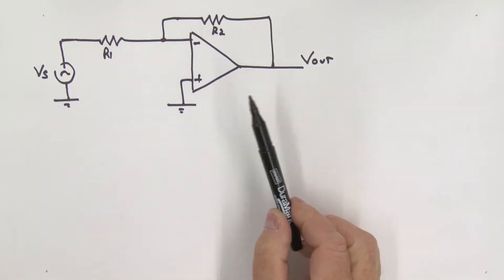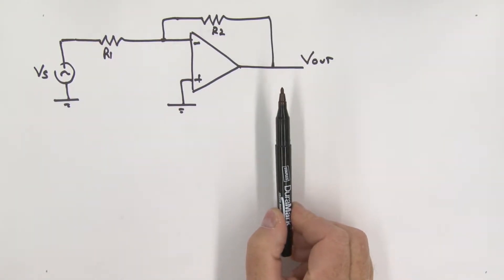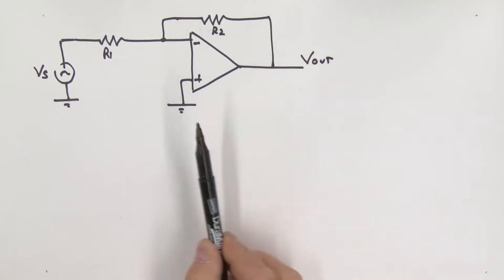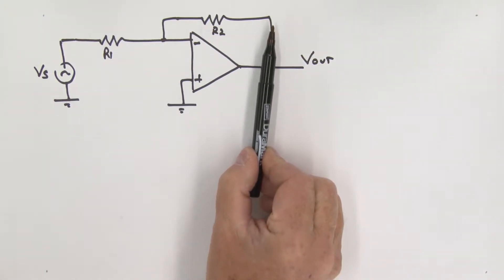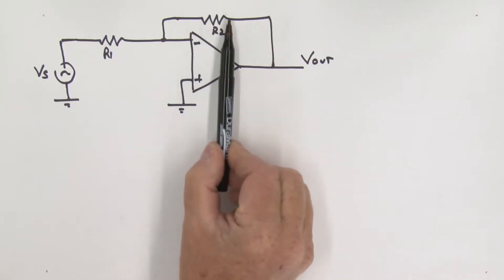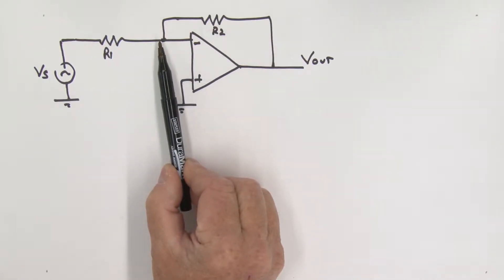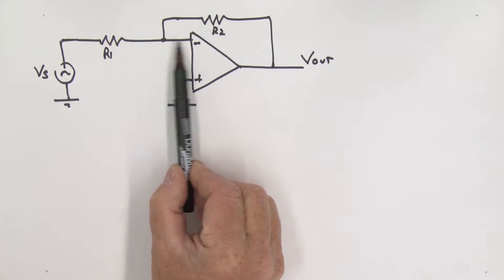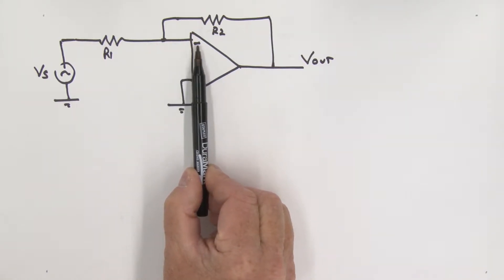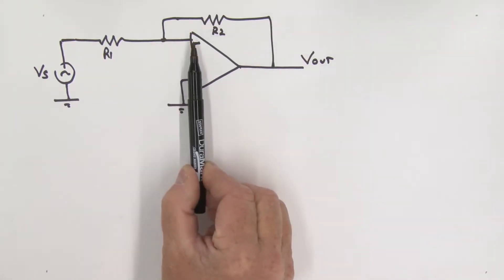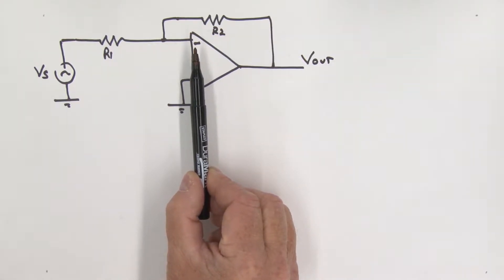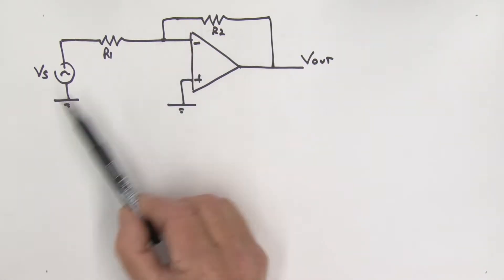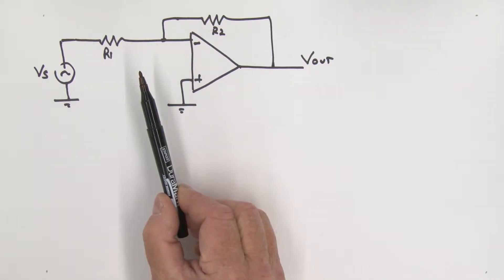What we're going to consider now are what we refer to as closed-loop circuits. We're actually going to take this output and connect it through this resistor back to the inverting input. This type of connection is referred to as a negative feedback connection. We're going to consider a bunch of negative feedback type circuits, and a little later on we'll also look at some positive feedback circuits.